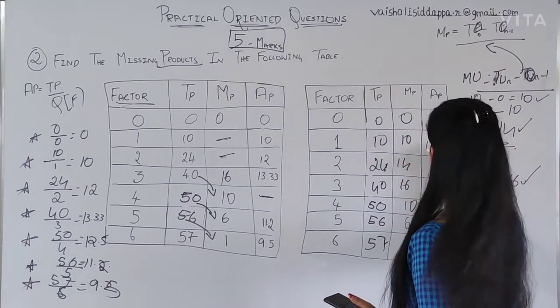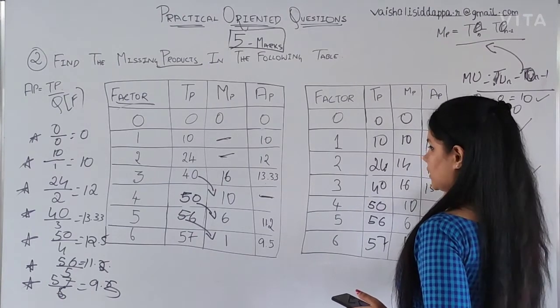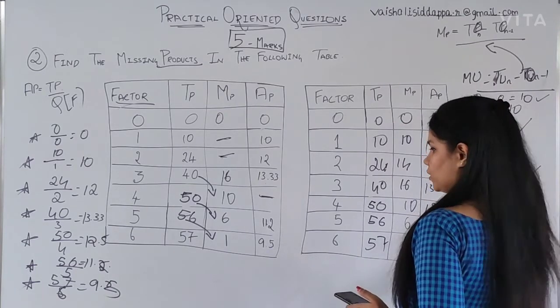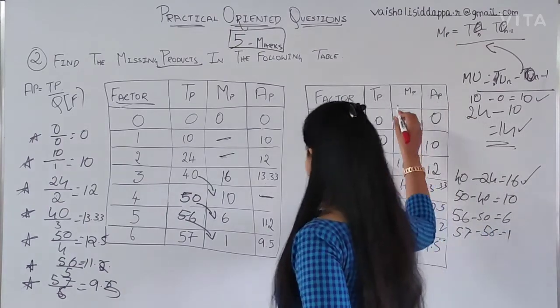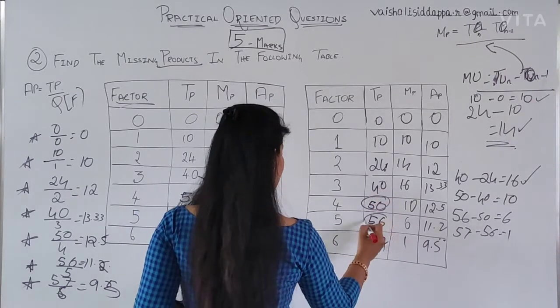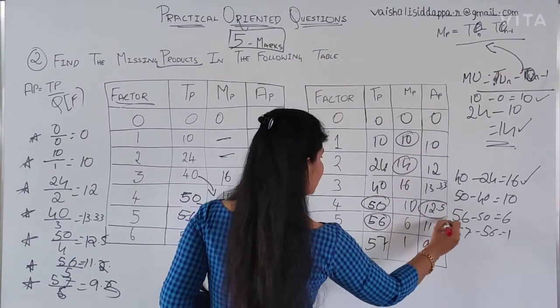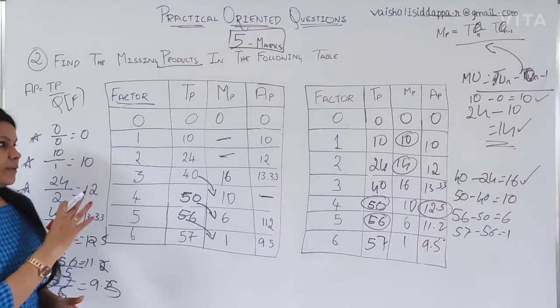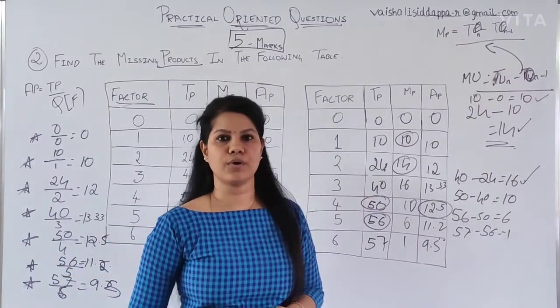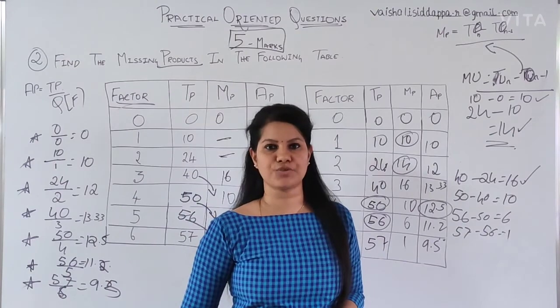First one, I got 0, which is already. Second one is 10. And the third one is 12. 13.33. 12.5. 11.2. And 9.5. So, now, we have filled all the blanks. The blanks were 50, 56 and 10, and finally this. These are the blanks we have filled with the help of this formula. So, when you are going to get in the exam, you should know how you will find out. So, thank you so much. I will be meeting in the next class with one more practical question. Thank you so much.